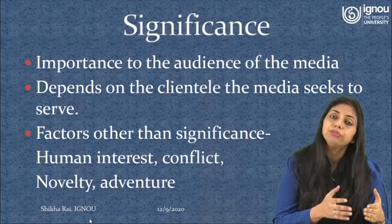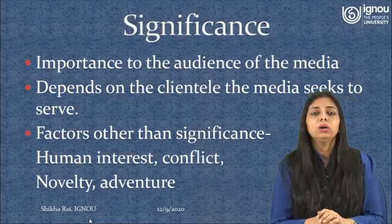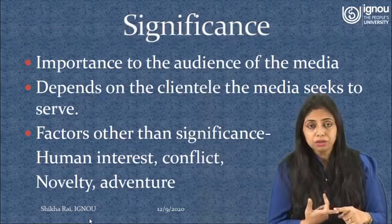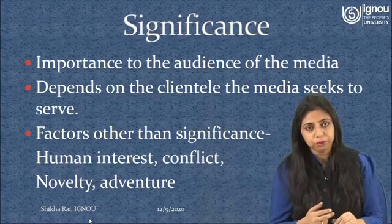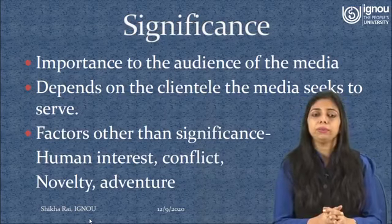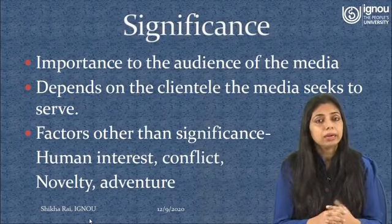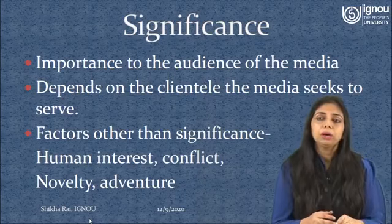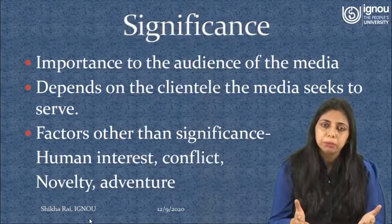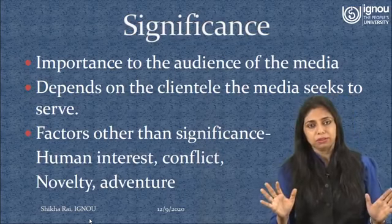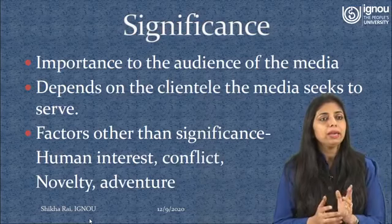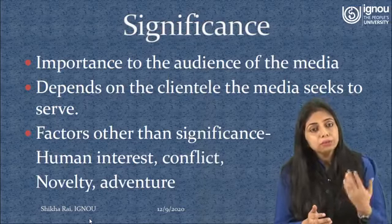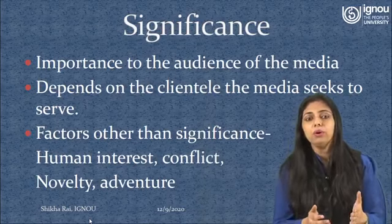When media takes the discretion to decide what must be brought to limelight and given adequate coverage for a reason that is not extensively for people at large and does not involve any profit motive, that is called human interest. Then we have conflict. Conflict can arise due to anything — a communal conflict, a conflict involving the third gender, or conflicts related to ways of educating people. Conflict has multiple reasons and is also a factor that makes news. Any sort of happening which can lead to incitement of an offense will make news, and this is how conflict becomes a secondary factor of significance in the elements of news.